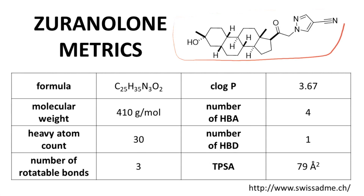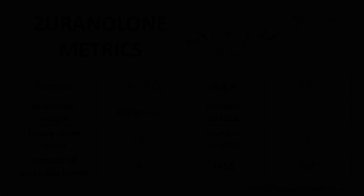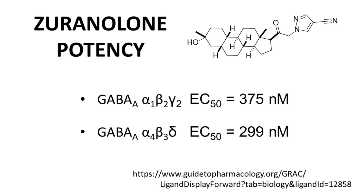Xeranilone's structure is in the upper right — I tilted it a bit to fit on the slide. We can see the A, B, C, D rings of the steroid scaffold, so this is clearly a member of the neurosteroid class. Moving on to some physical chemical properties: xeranilone is a small molecule oral drug and its metrics match exactly that — around 30 heavy atoms, a molecular weight of under 500, a moderate lipophilicity, etc. The reported potency values for xeranilone are in the 300 nanomolar range for EC50 against various GABA-A subtypes.